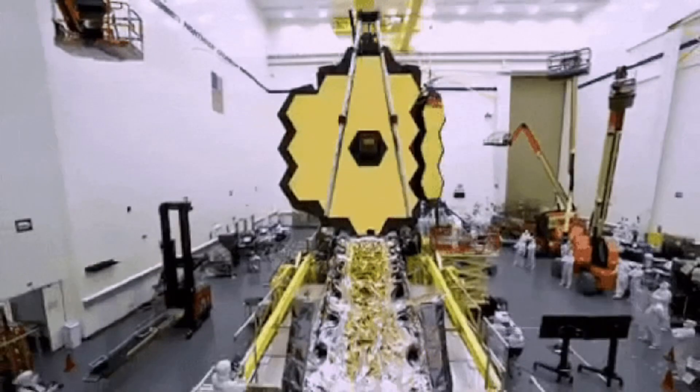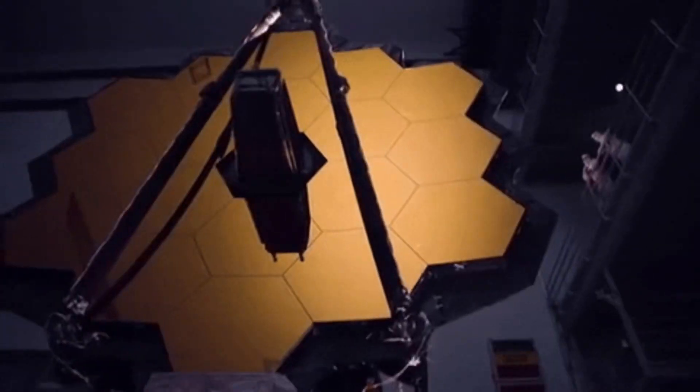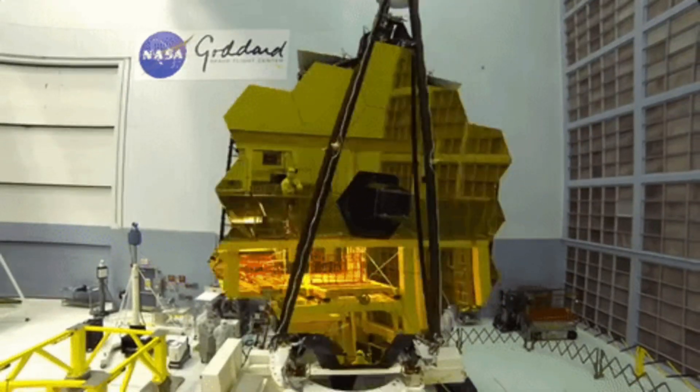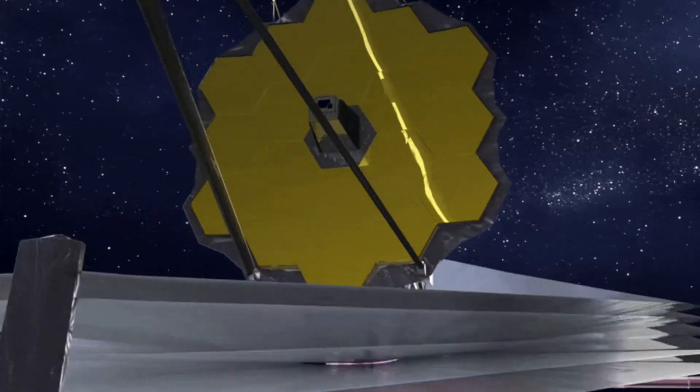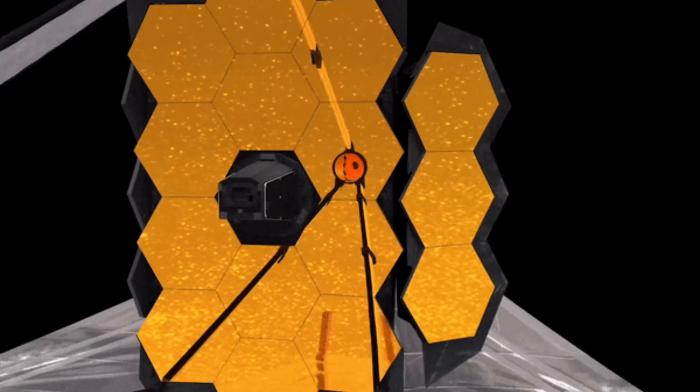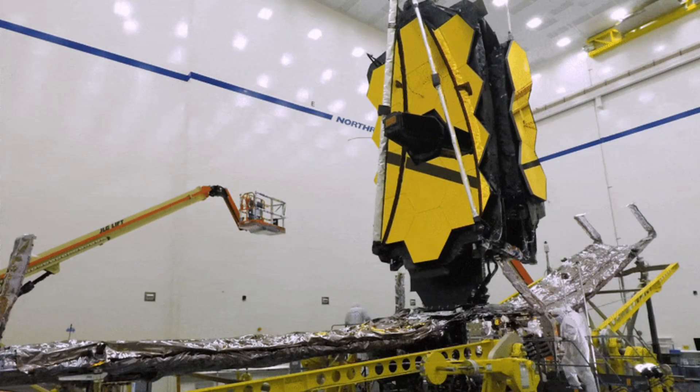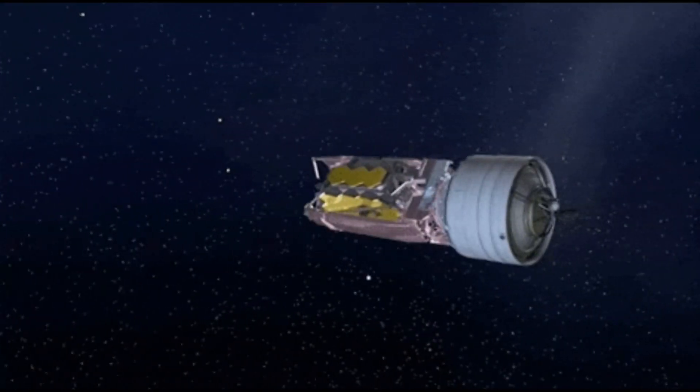One of the major challenges faced during the development of the James Webb Space Telescope was its size. The telescope is much larger than the Hubble, with a sunshield the size of a tennis court and a primary mirror that is 6.5 meters in diameter, compared to the Hubble's 2.4-meter mirror. This posed significant challenges in terms of its design, construction, and eventual deployment in space.